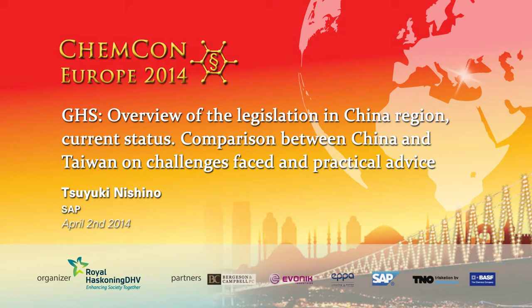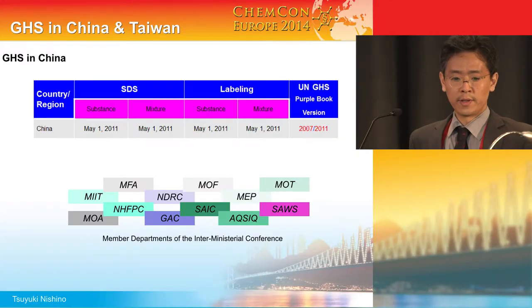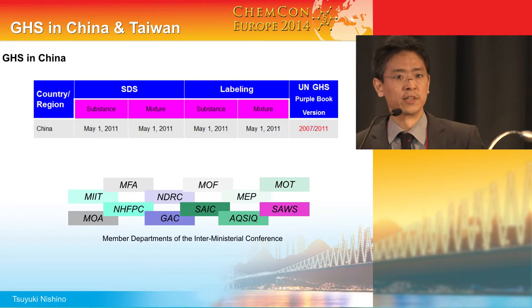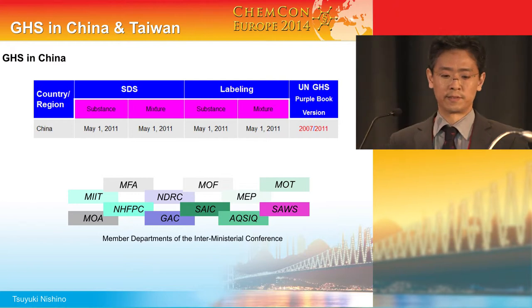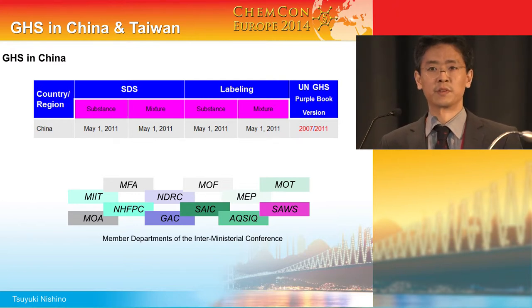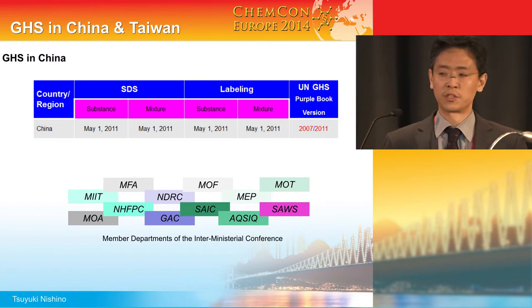I would like to talk today about China and Taiwan GHS. This will include classification, labeling and SDS. In China, GHS, SDS and labels are required since 2011 for substances and mixtures.